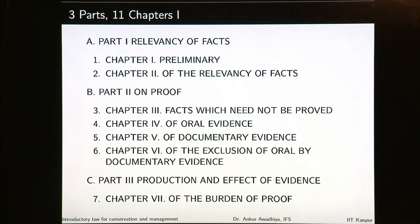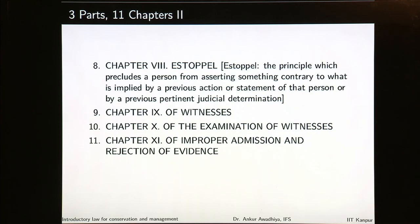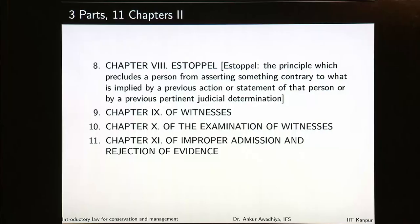Chapter seven deals with the burden of proof — who has to prove whether something is an evidence or not. Chapter eight deals with estoppel, which is the principle that precludes a person from asserting something contrary to what is implied by a previous action or statement of that person or by a previous pertinent judicial determination. Meaning that in a court of law, you cannot say A is true and then later say A is false. Estoppel stops you from doing that; if you have asserted or proven something in court, you must stand by it.